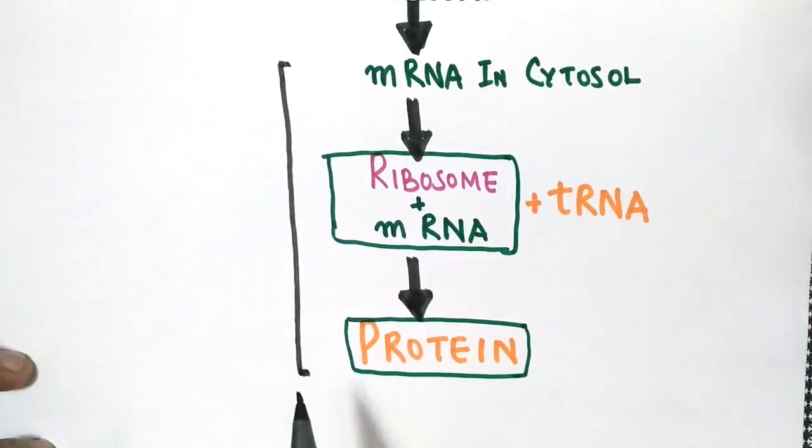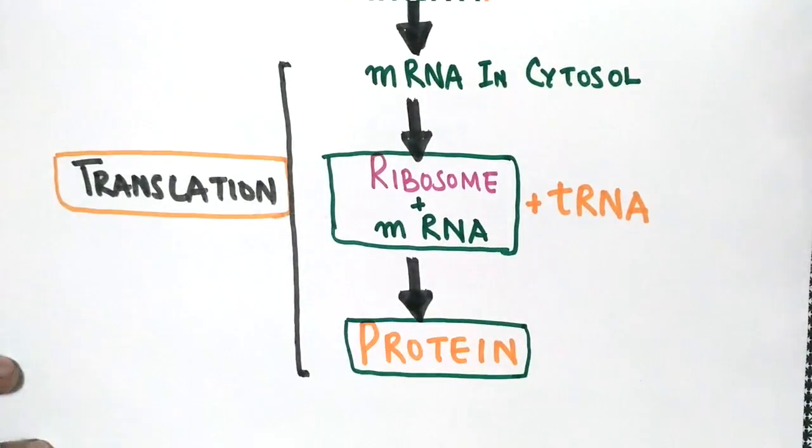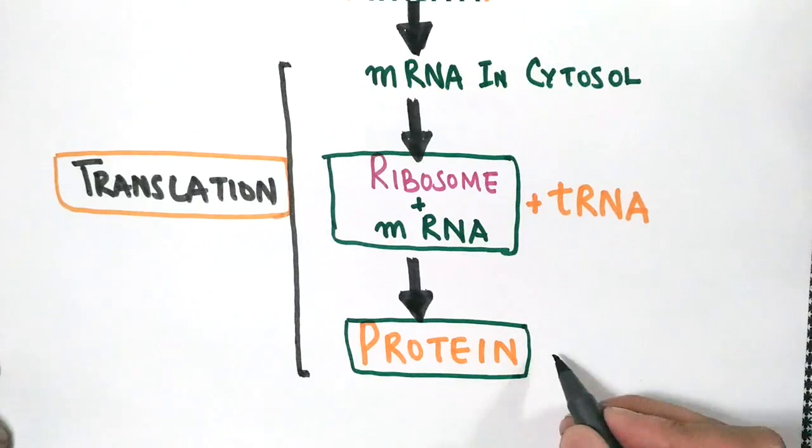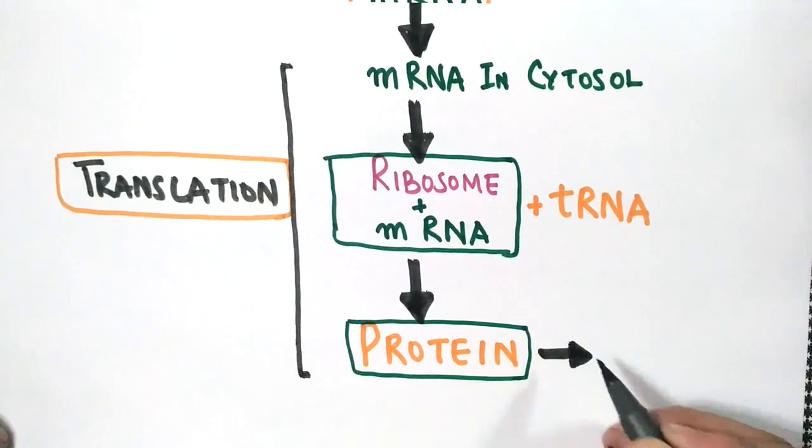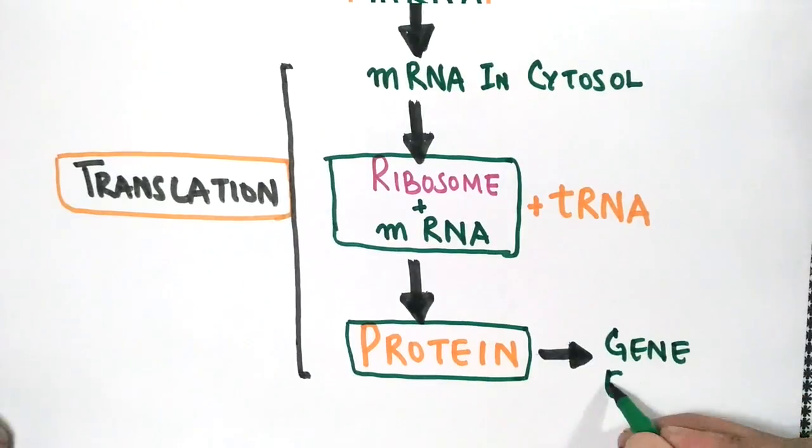This process is called translation. So in the end of gene expression, the information on a gene is expressed through protein because this protein will alter the metabolism or behavior of an organism. It gives a definite function, and we say the gene is expressed.